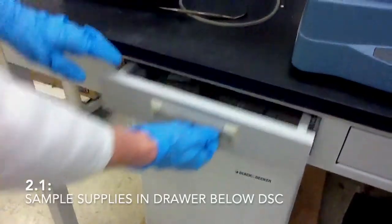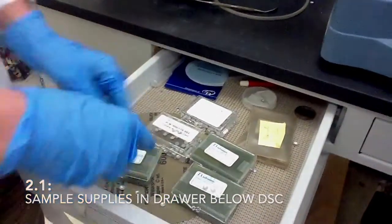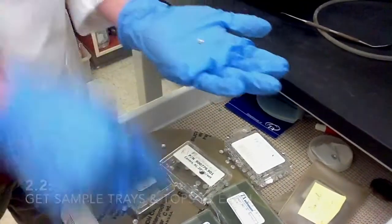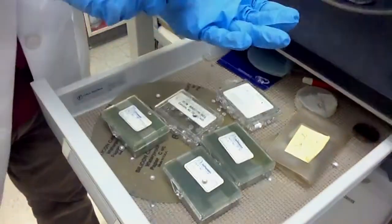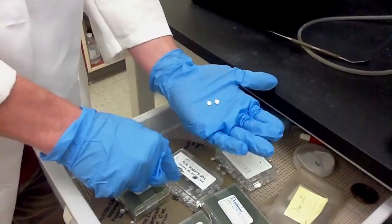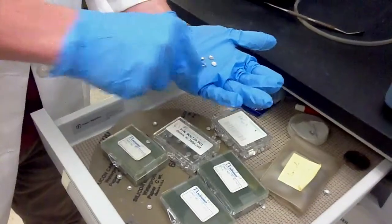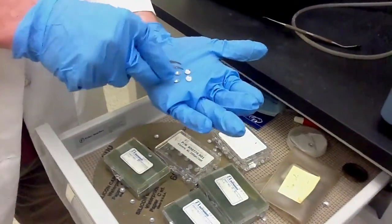For sample preparation, we're going to need two parts. We're going to need this bottom part and then also a top part here. In fact, I think we're going to need two of these. And then we take these over to the scale.